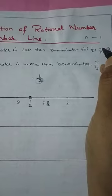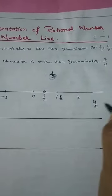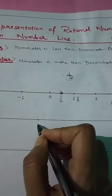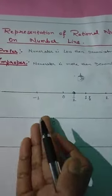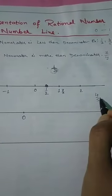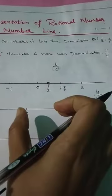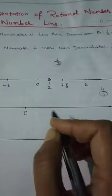Suppose you have to plot 4/5. This is a positive number, so take 0 in the middle and mark 1, 2, 3, 4 to the right. If a negative number were given you would go to the left side. The denominator is 5, so we will divide the segment from 0 to 1 into 5 equal parts.